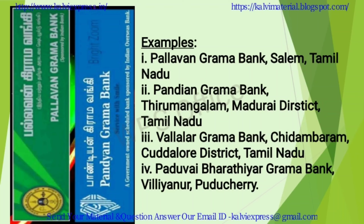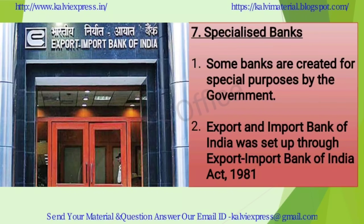Examples of RRBs include Pallavan Grama Bank, Pandyan Granthalaya Grama Bank, and Villianur, Puducherry. From their names, we can tell these banks are established in villages to help villagers avoid dependence on money lenders, so people can freely access loans based on their necessity.